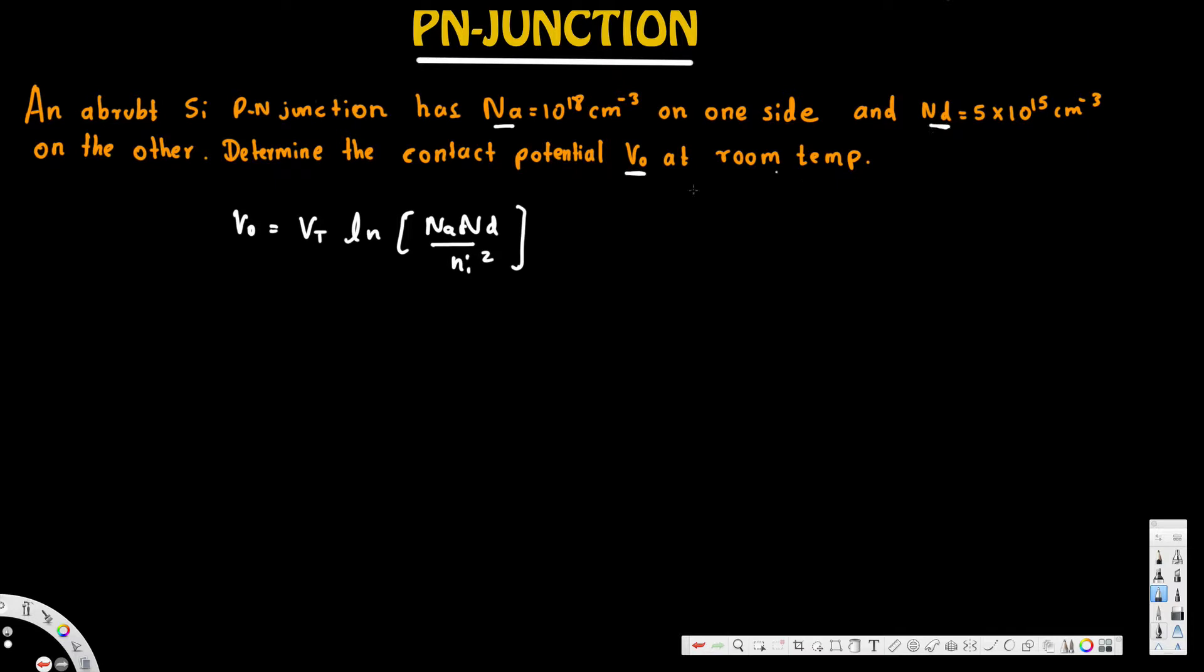Now, do we have Na? That's given. And Nd? That's given. ni squared is the intrinsic concentration. Now here they have mentioned this is silicon at room temperature. So for silicon, ni is equal to 1.5 times 10 to the power of 10 centimeter minus 3.